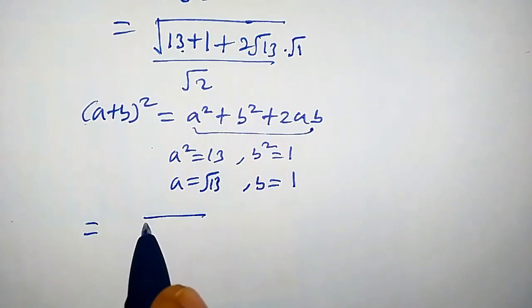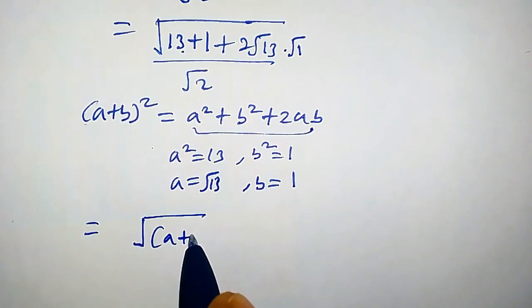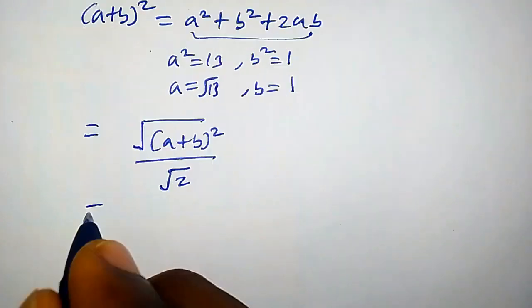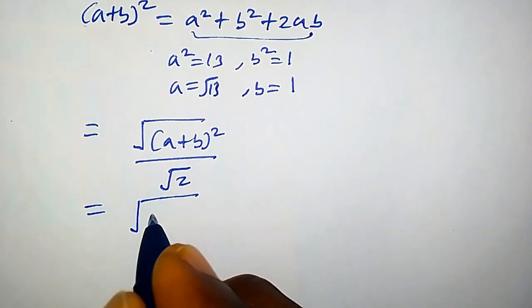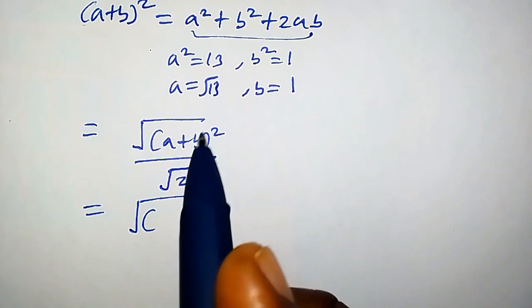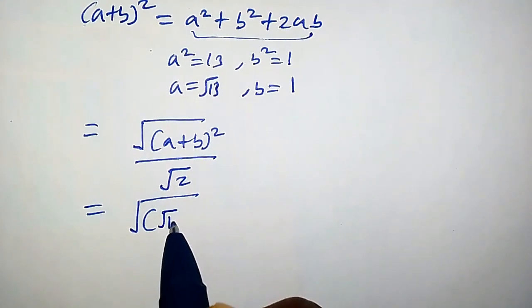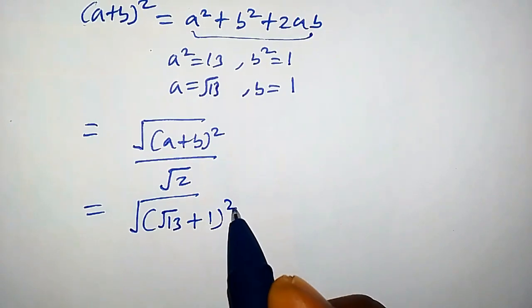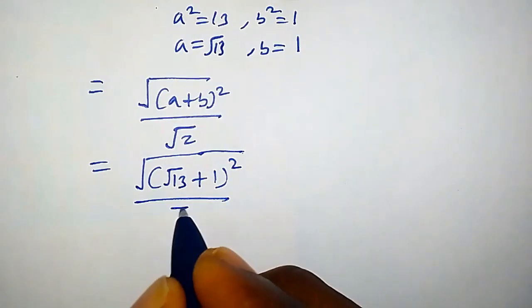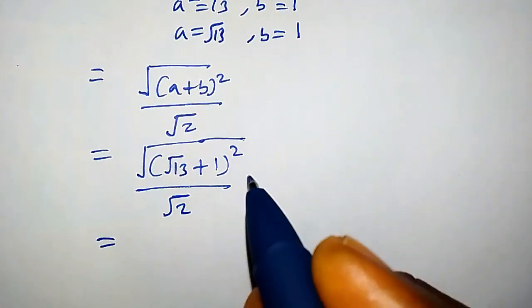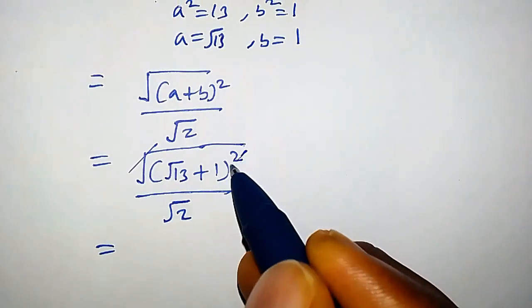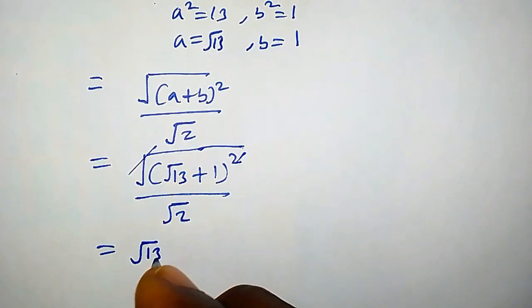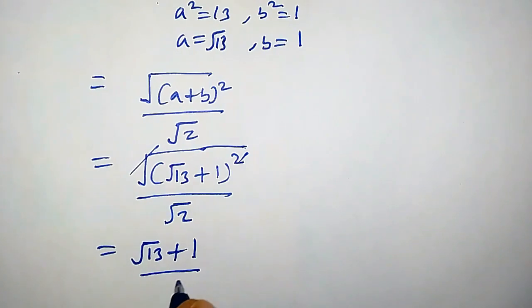From here we replace the numerator to get √((a + b)²) all over √2. Since a = √13 and b = 1, this equals √((√13 + 1)²) over √2, which simplifies to (√13 + 1) over √2.